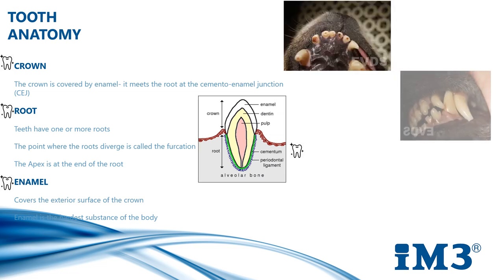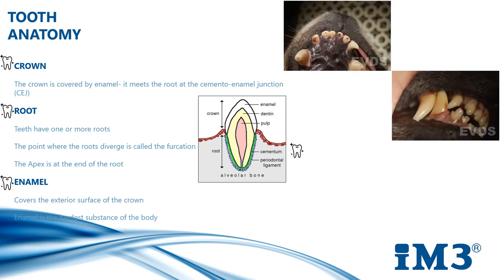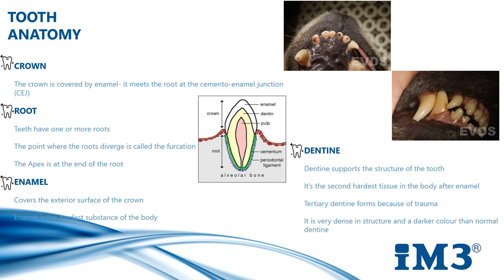Dentine supports the structure of the tooth. It's the second hardest tissue in the body after the enamel. As long as the pulp is alive, dentine is laid down in layers within the pulp cavity. Dead pulp will not do this, so damaged teeth will show an increasing difference of pulp chamber width on x-rays as the animal ages.